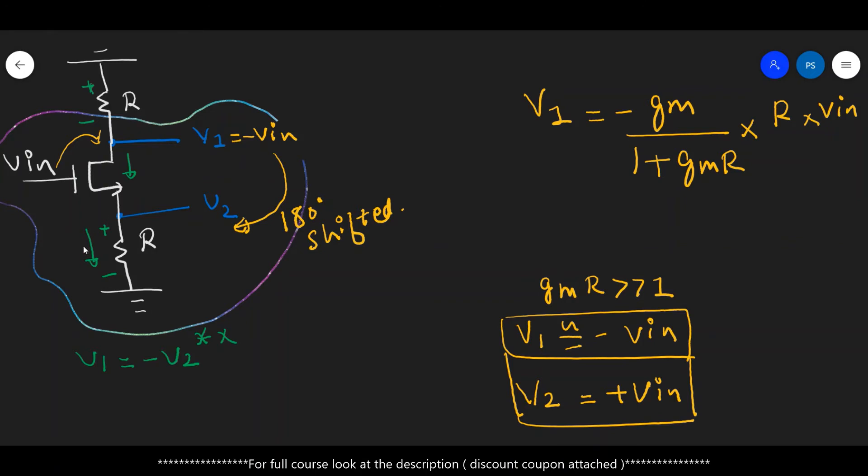It means the voltage drop across this resistor, which is V1 itself, is equal to the voltage drop across this R, which is V2. It means that in magnitude, the V1 and V2 are equal because the voltage drop across the resistance is same. So what changes from here to here is only the phase.